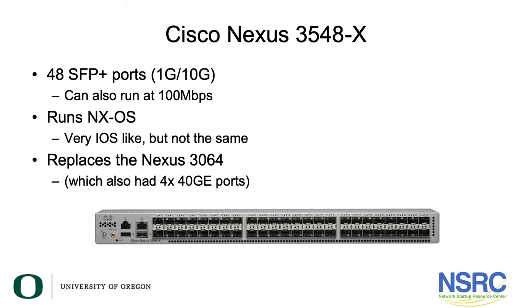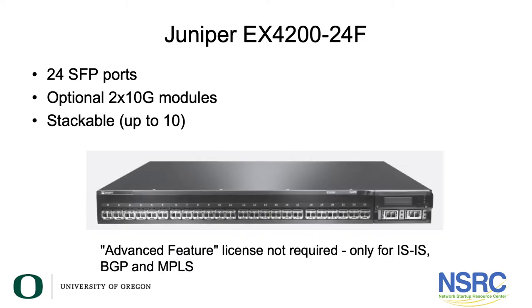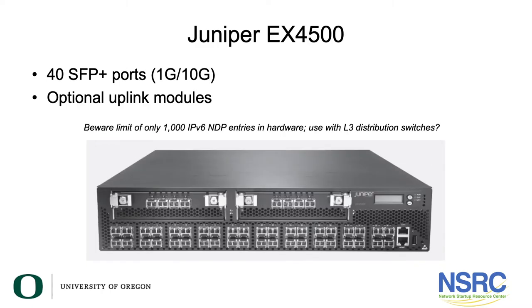The Nexus 3064 also had four 40-gig Ethernet ports, very handy for uplinks or connecting two Nexus switches together. On the Juniper side, there's the EX4200 with 24 SFP ports and two optional 10-gig modules for uplinks — stackable, and you don't need the advanced feature license, which adds IS-IS, BGP, and MPLS, none of which are needed for a campus core router. There's also the EX4500, which is similar to the Cisco Catalyst 4500, with 40 SFP+ ports (dual personality, 1 gig or 10 gig) and optional uplink modules. Just be aware it has a limited number of IPv6 Neighbor Discovery Protocol entries — only 1,000 in hardware — which could be limiting for a campus with a sizable IPv6 deployment.